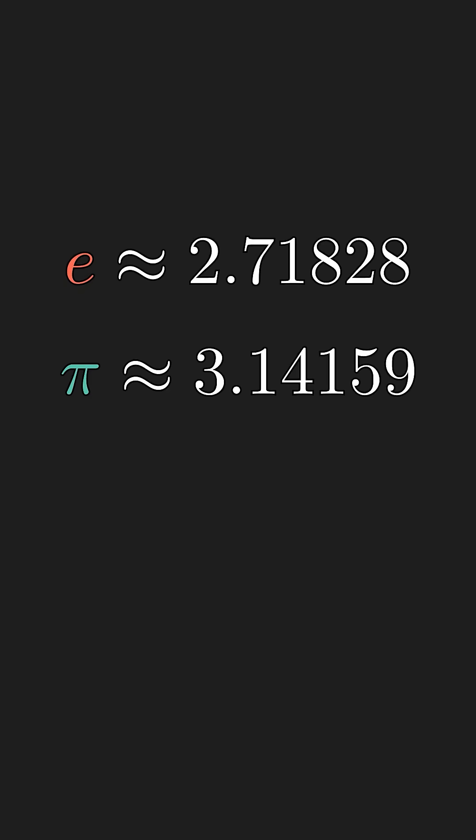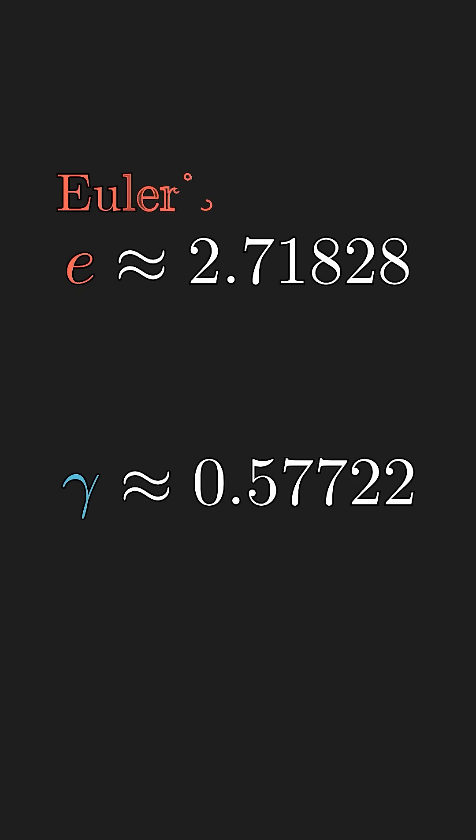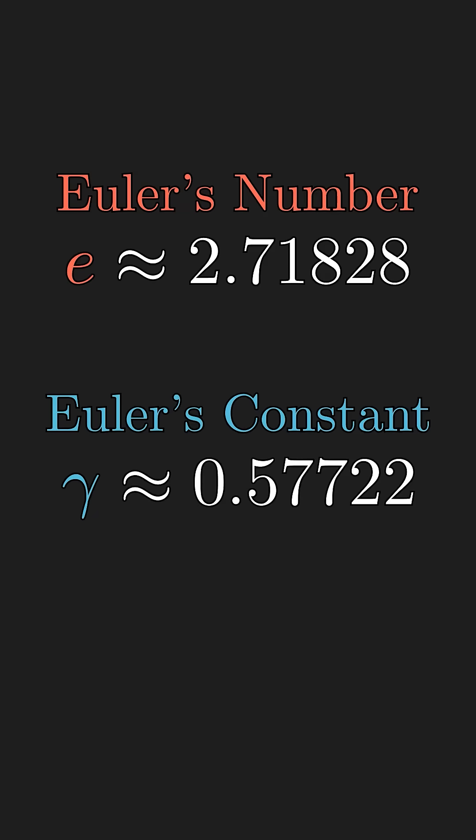You're probably familiar with the two most important constants in calculus, but perhaps not the third one. E is named after Euler, and Gamma is also named after none other than Euler.